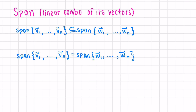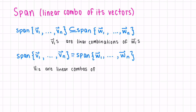A quick notation note: if we're saying that the span of v's is included in the span of w's, this is equivalent to saying that the vi's can be written as a linear combination of the w vectors. To say that these spans are both equal, this inclusion has to go both ways — so the vi's are linear combinations of the wi's, and vice versa, each w vector can be rewritten as a linear combination of the v vectors.